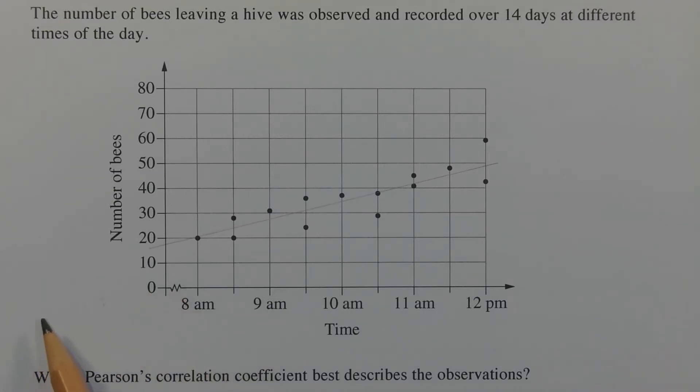Now looking at this line of fit we can see that we have a positive correlation since it has a positive gradient between the number of bees and the time of day.